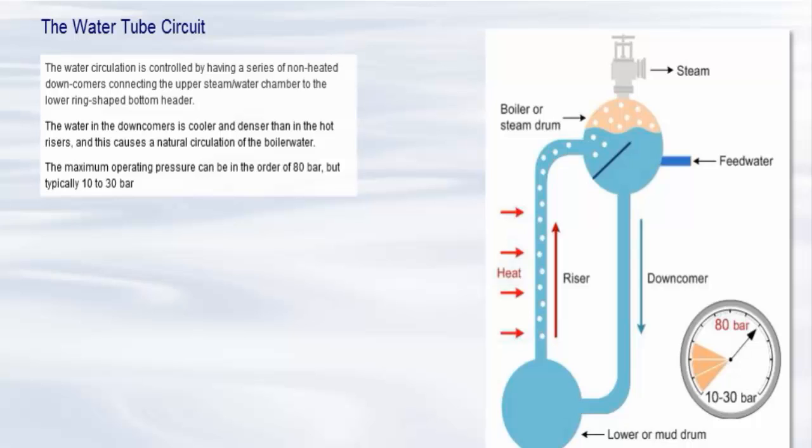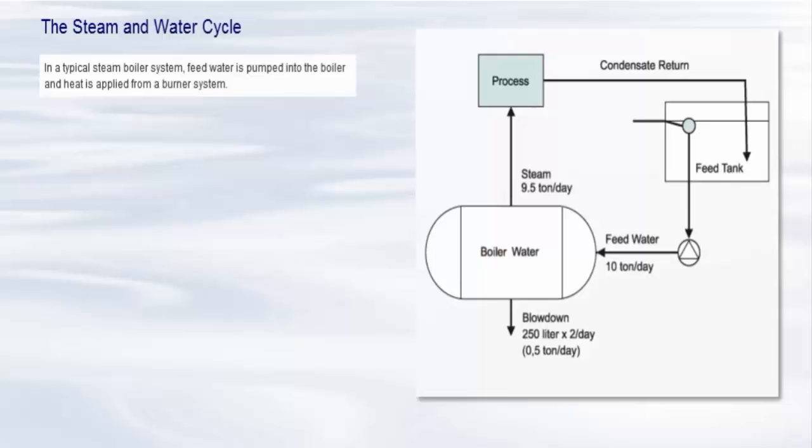The pipework inside water tube boilers is configured to extract as much heat from the furnace area as possible. Common pipework configurations are termed O, D and A type boilers. In a typical steam boiler system,